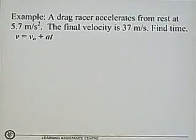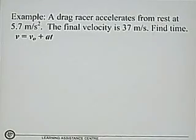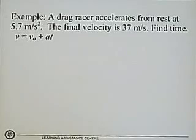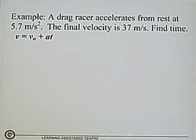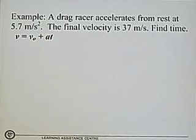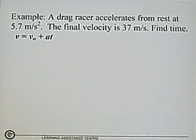Here's an example of what I'm talking about. Here we have a word problem: a drag racer accelerates from rest at 5.7 meters per second squared. The final velocity is 37 meters per second. Find the time. From this word problem, we have to take out the information that we need. Sometimes it's a little hard to figure out what it is, but we do know a few things here.